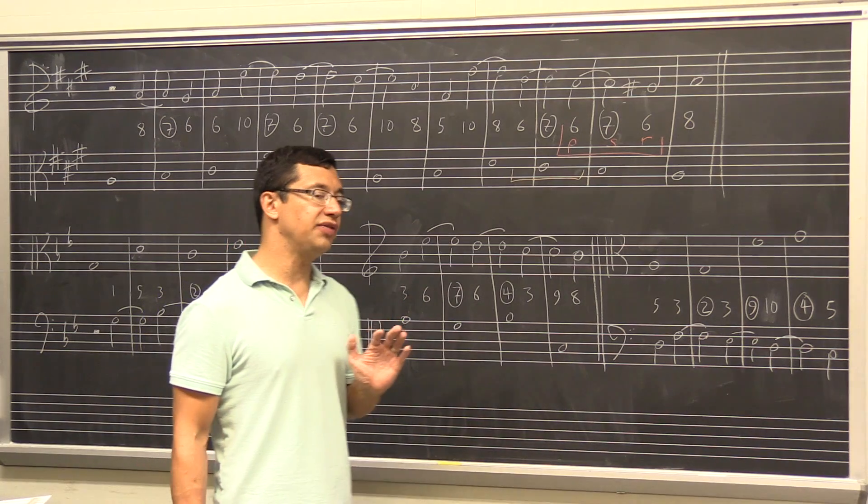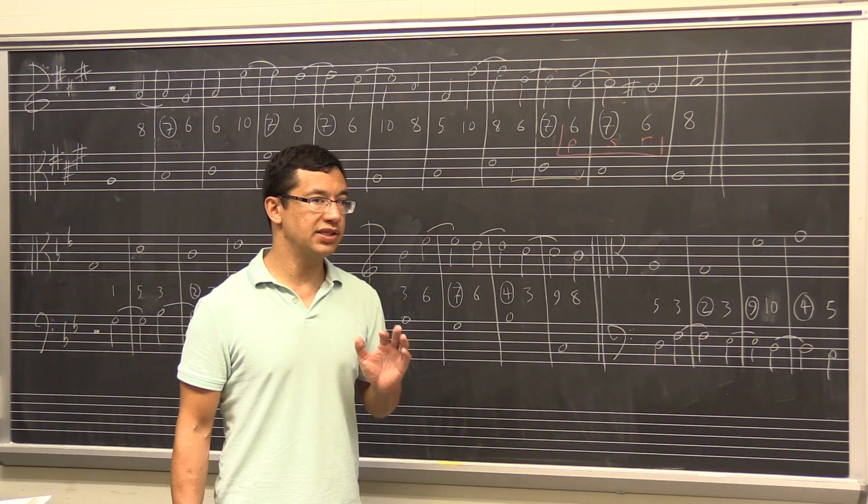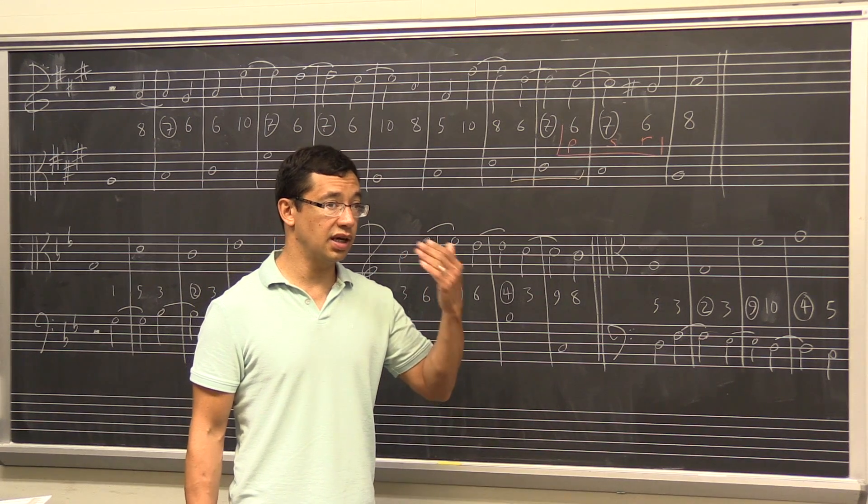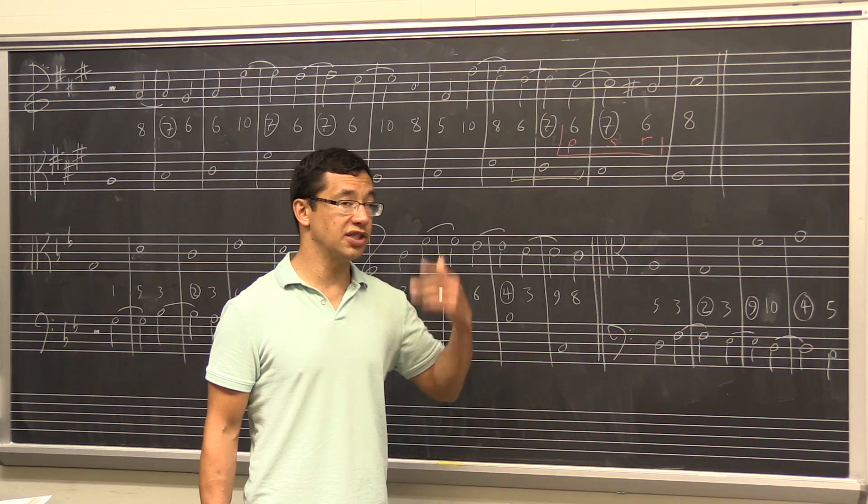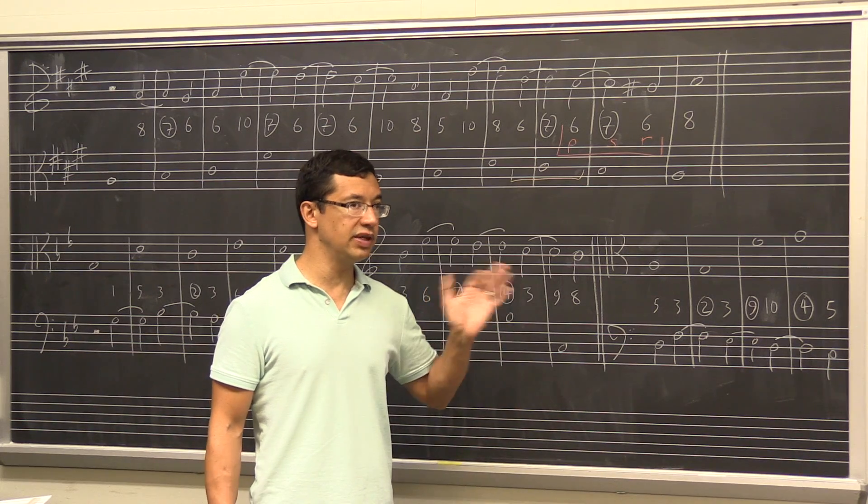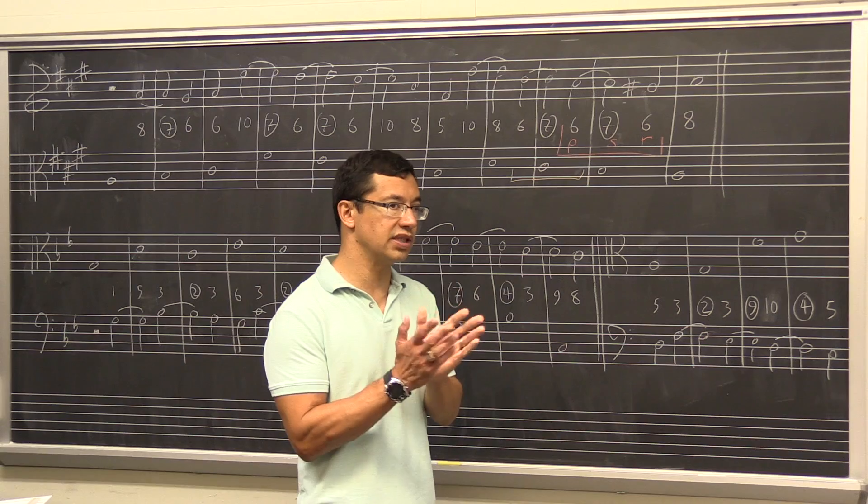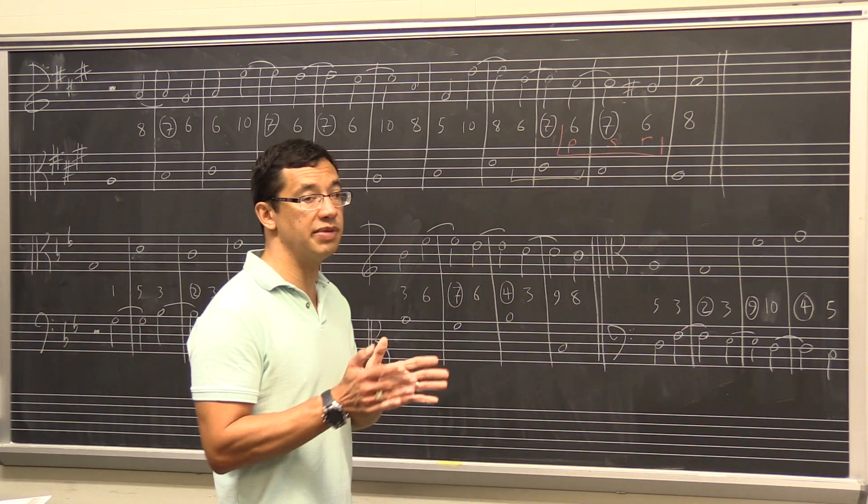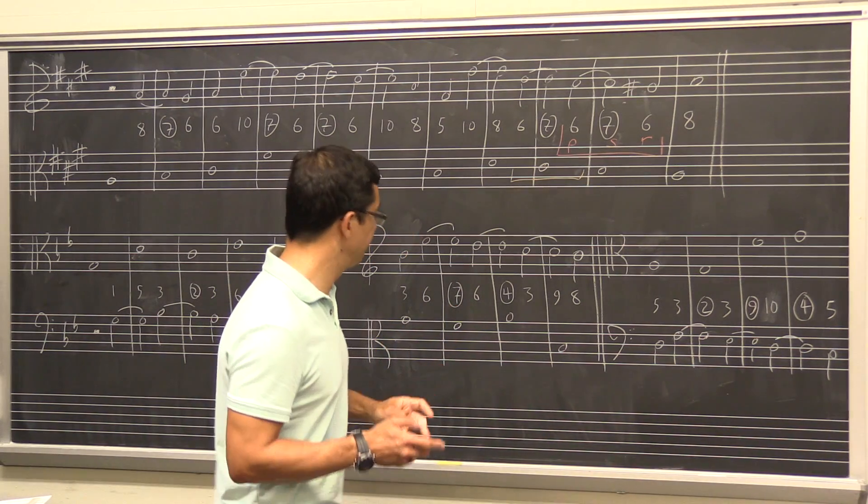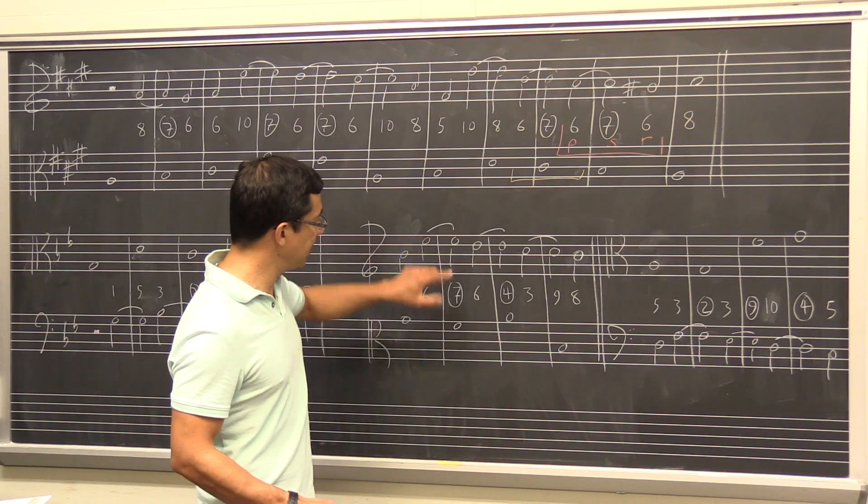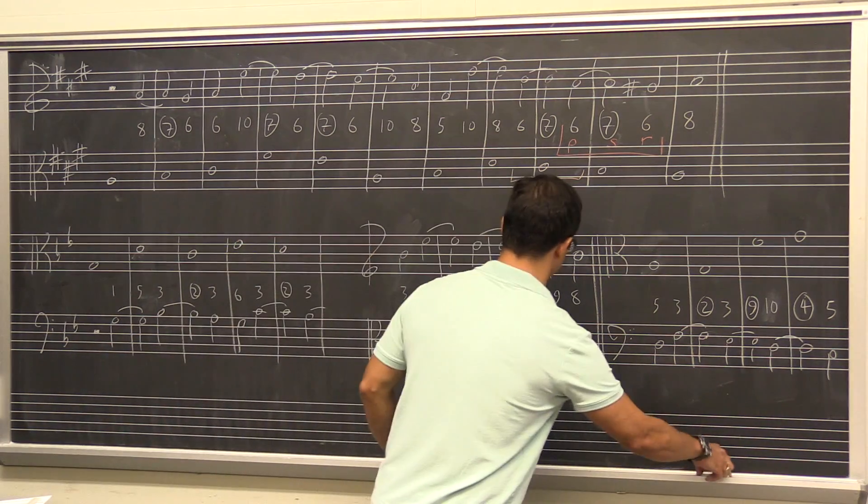We identify suspensions based on the intervals between the counterpoint and the cantus firmus of the suspension and the resolution. The preparation we don't care about as much. It can be any consonance, it doesn't matter. That doesn't determine the suspension type. The suspension type is based on the interval of the suspension and the resolution, and there are three of them.